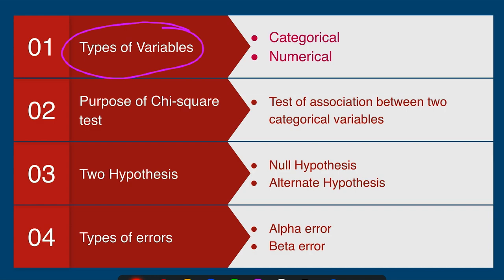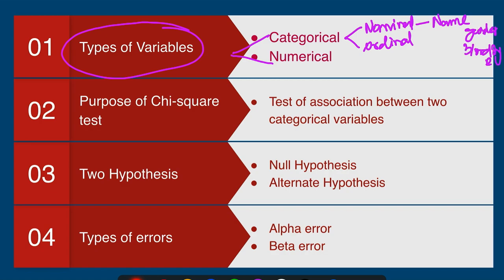We need to understand there are two types of variables: categorical and numerical. Categorical can be further divided into nominal and ordinal. Nominal means it's just a name — for example, gender and blood group are nominal variables. Ordinal means the variables follow a rank order even though they are categorical. For example, mild, moderate, and severe anemia is a categorical ordinal variable.